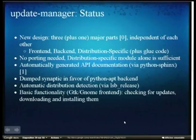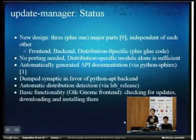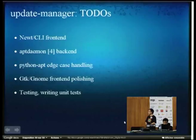We wanted to have a cleaner design, cleanly separated between front-end and back-end, and the ability to extend it to support specificities of other distributions, such as those made for netbooks or specific machines. This new design comprises a front-end, back-end, and a distribution-specific part, so no specific porting is needed except writing plugins. There is new documentation that will be automatically generated. We dumped calling Synaptic with a very long command line in favor of the Python APT backend developed at Debian. We have automatic distribution detection and new functionality for headless use.